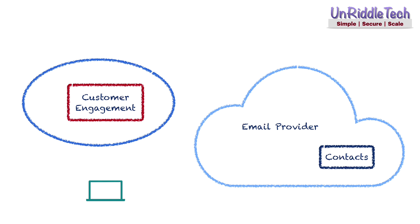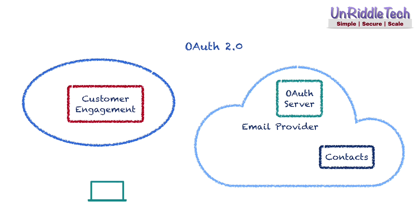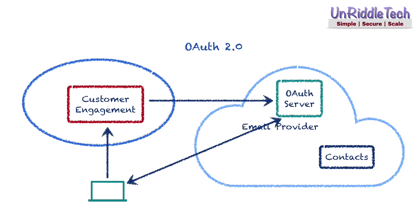This is possible if the email service provider supports OAuth. OAuth is a standard for delegating authorization. The application has to be configured to trust the OAuth server that belongs to the email provider. The application gets a client ID and secret after successful registration with the OAuth server. The customer accesses the application using the browser and initiates the process to request the application to read contacts. The application redirects the request to the OAuth server, which provides a login screen to the user.